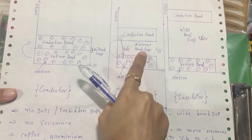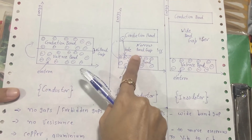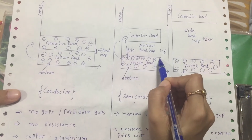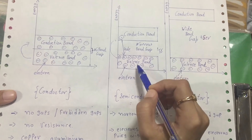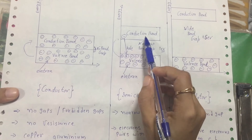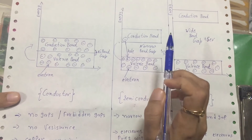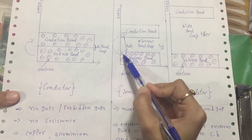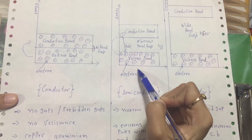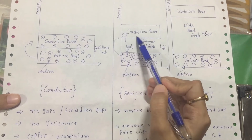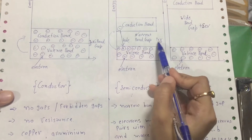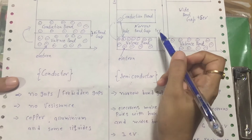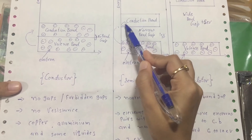The semiconductor has a narrow gap, also called the forbidden gap. After applying approximately one electron volt supply, electrons start to move from the valence band to the conduction band. One important thing in semiconductors is that there are some holes in the valence band and a few electrons in the conduction band.